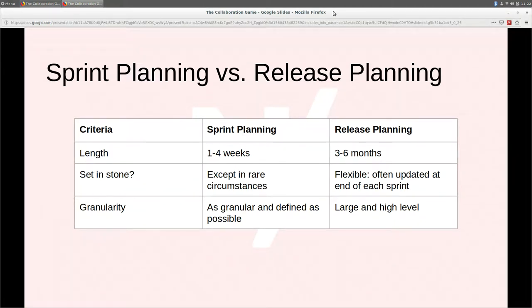So how does release planning differ from sprint planning? Sprint planning: one to four weeks, often two. Release planning: three to six months, often three. Sprint plans we're typically trying to set in stone — it's a contract between the dev team and stakeholders about what we're going to achieve in a two-week period. We occasionally have something come up very urgently that has to be undertaken, but we resist changing that sprint plan as much as we can.